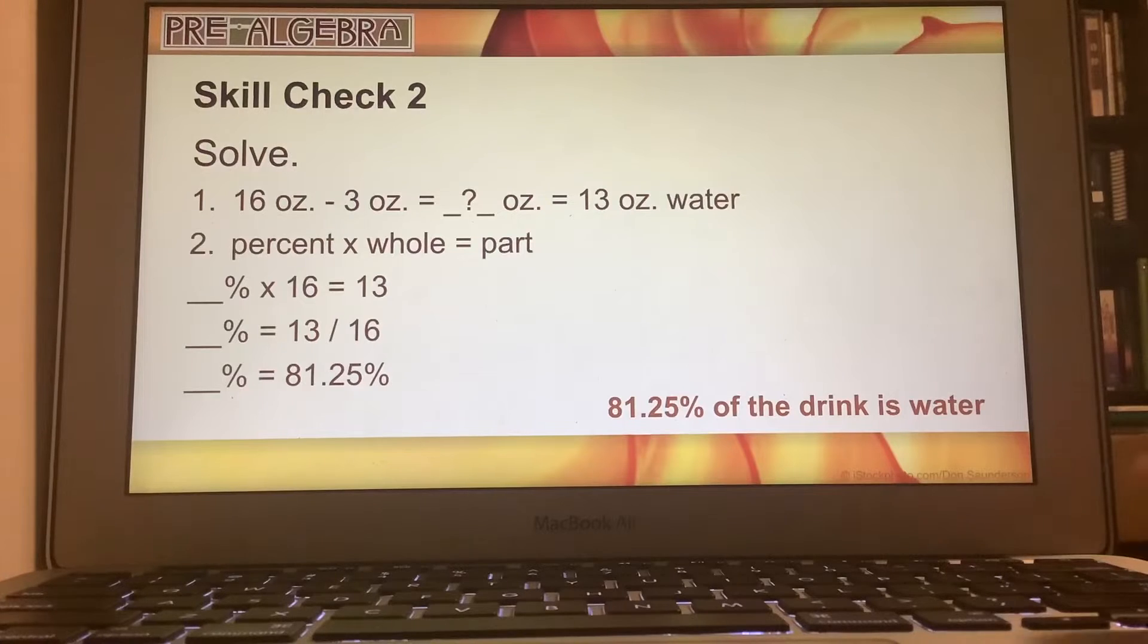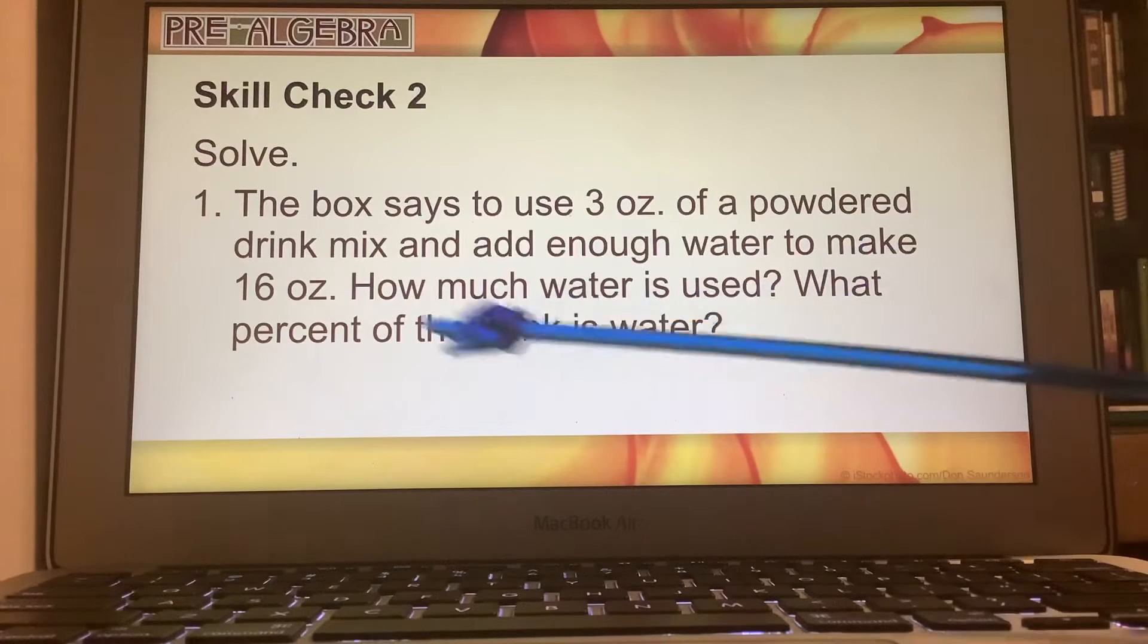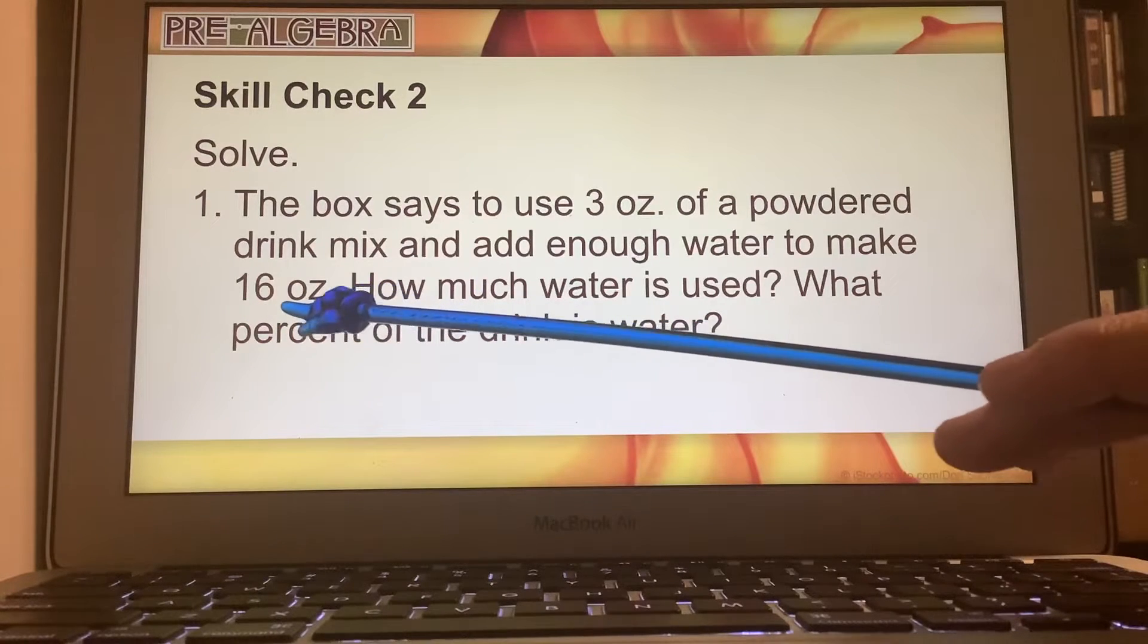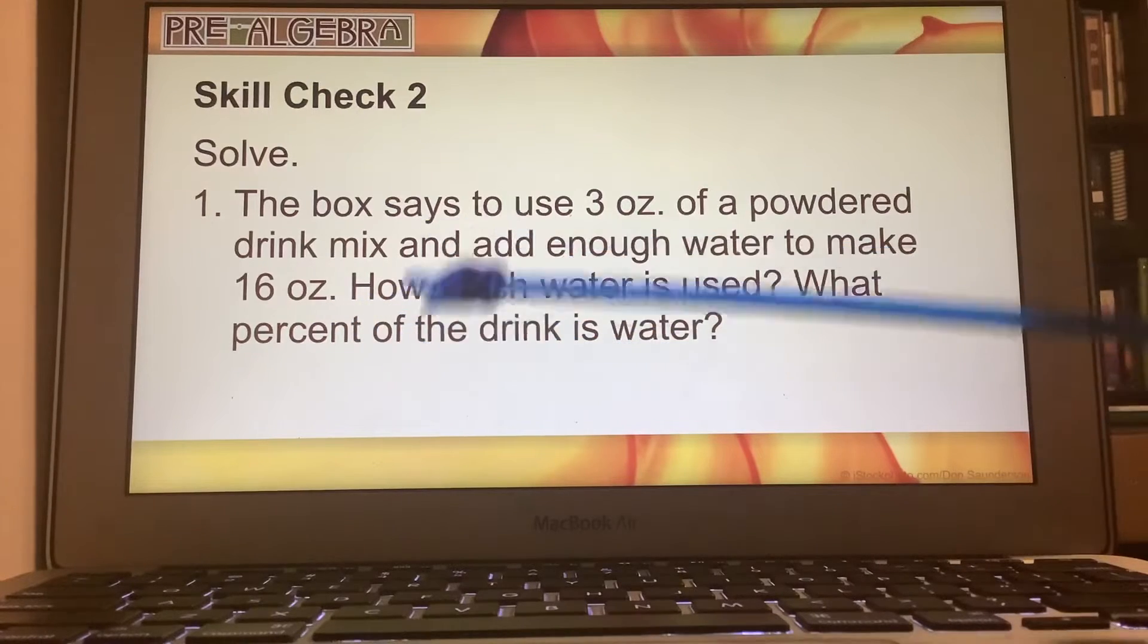Okay, then let's go back to the problem here. So we have, we're going to make a total of 16 ounces of this drink. And we already calculated earlier, we need 13 ounces of water to make the total amount of 16 ounces here.